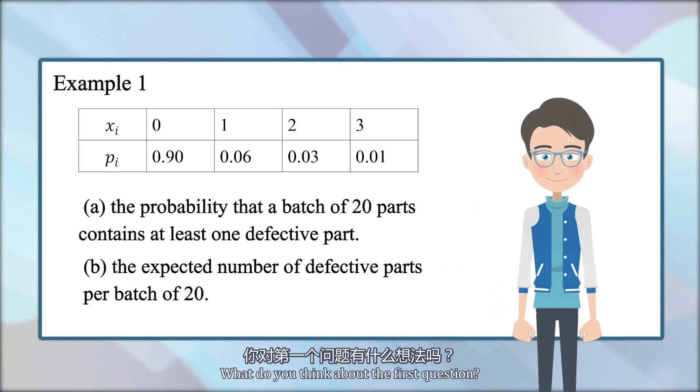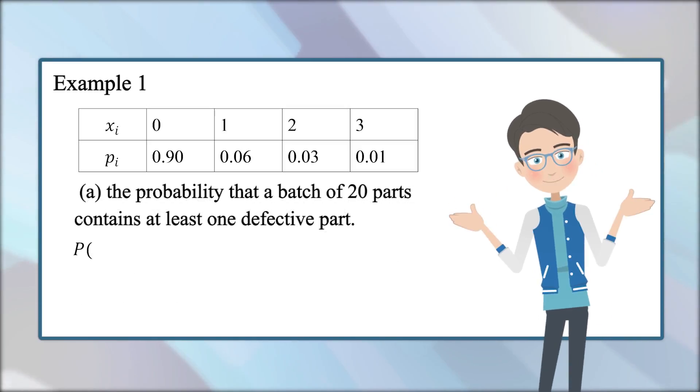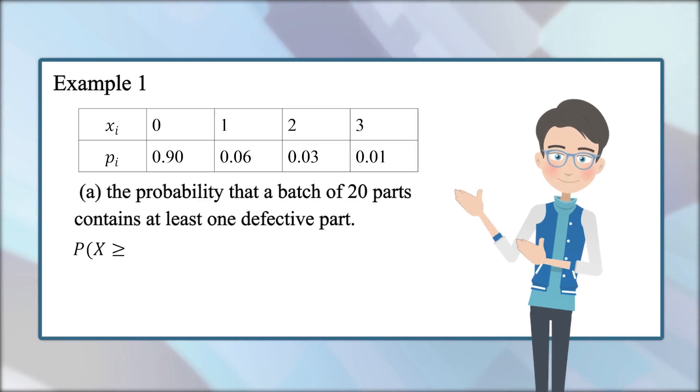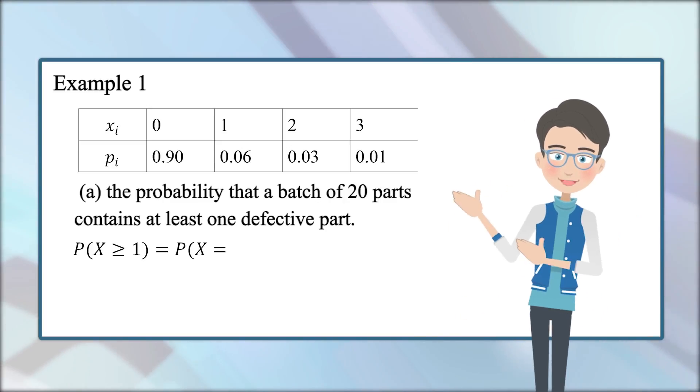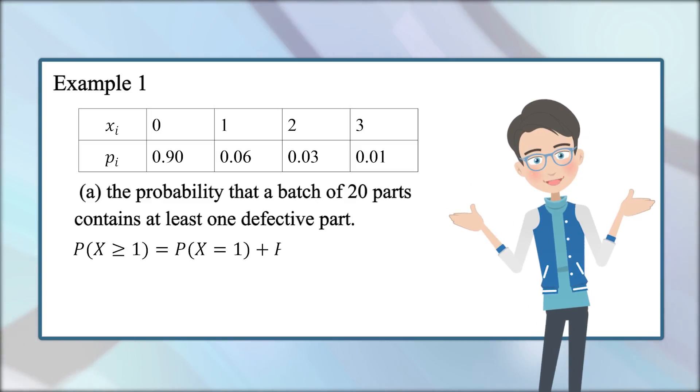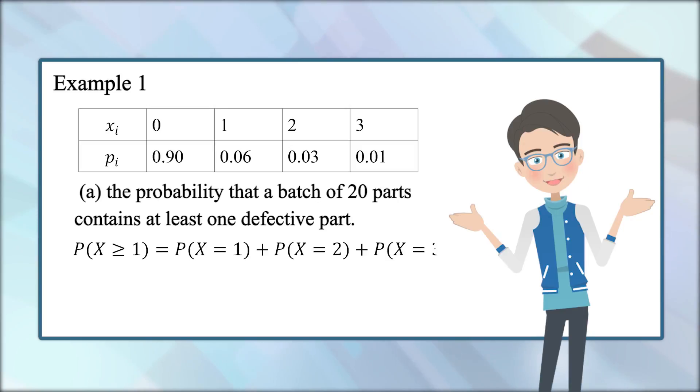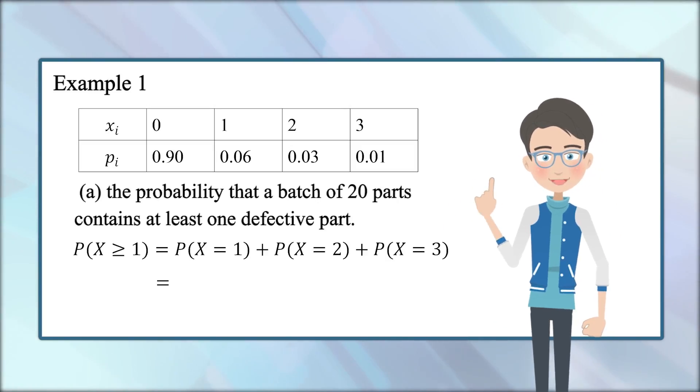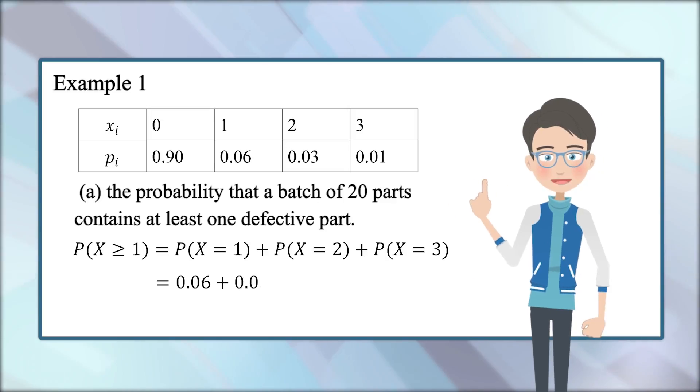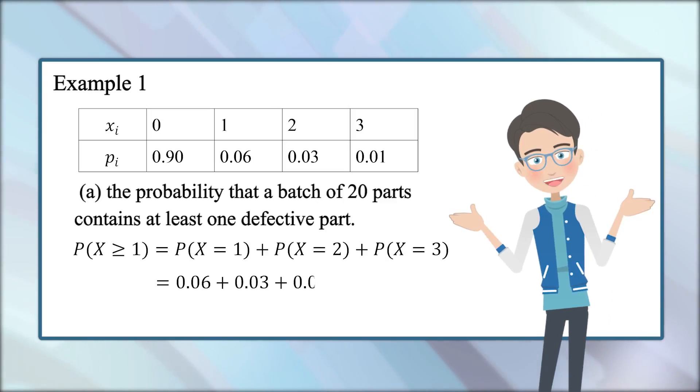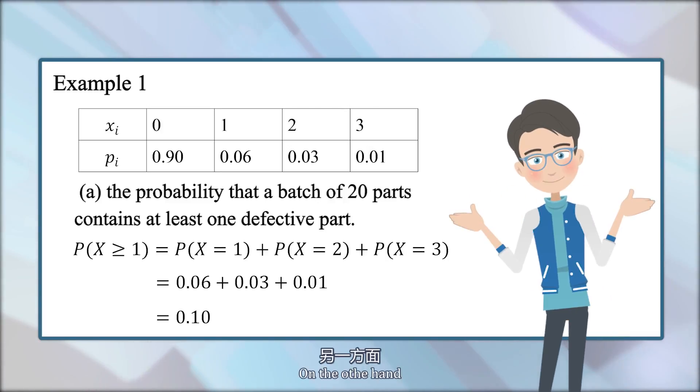What do you think about the first question? Solution: The probability of X greater than or equal to 1 equals the probability of X equals 1 plus the probability of X equals 2 plus the probability of X equals 3, which equals 0.06 plus 0.03 plus 0.01, which equals 0.1.